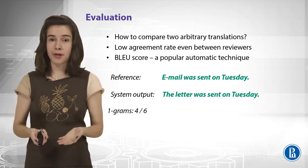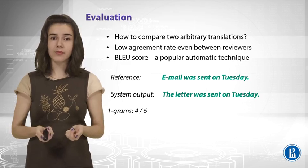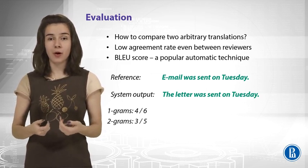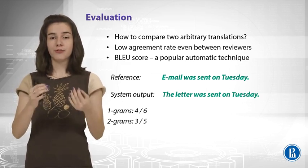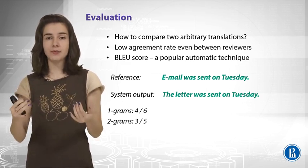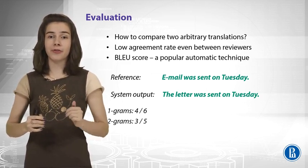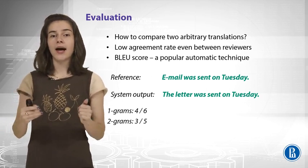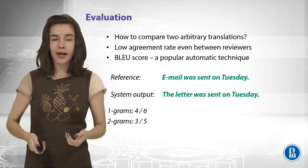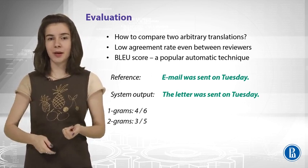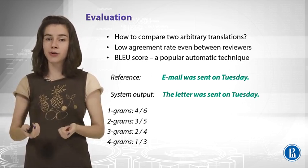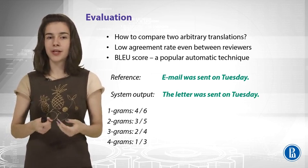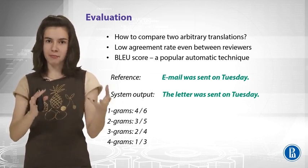The bigram score will be three out of five, because you have five bigrams in your system output and only three of them — 'sent', 'sent on', and 'on Tuesday' — occur in the reference. You can proceed and compute three-gram and four-gram scores, then average them to get some measure.